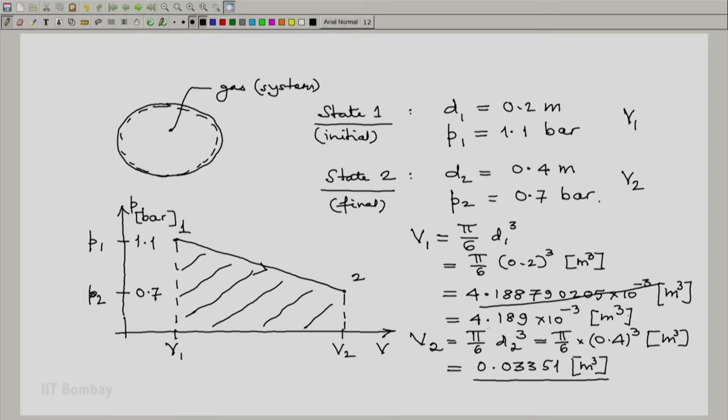So we know the final volume, we know the initial volume. We can write V1 as 4.189 × 10⁻³ and V2 as 0.03351, both values in meter cube.